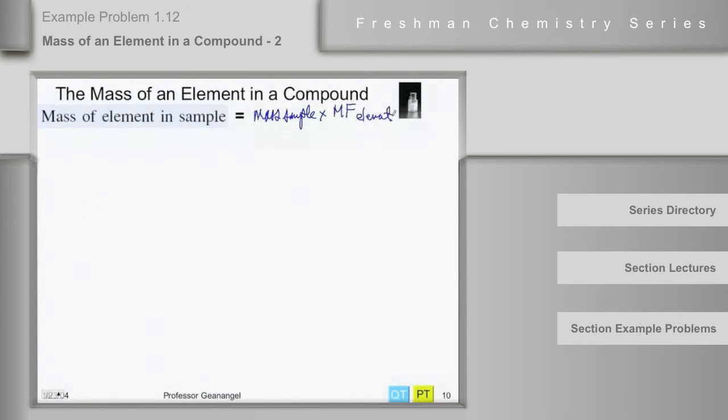So this is a way to use mass fraction information to calculate how much gold there might be in a sample of gold ore, for example.